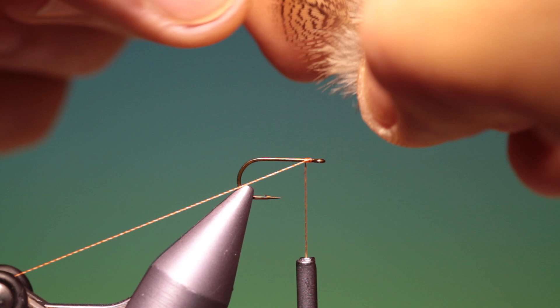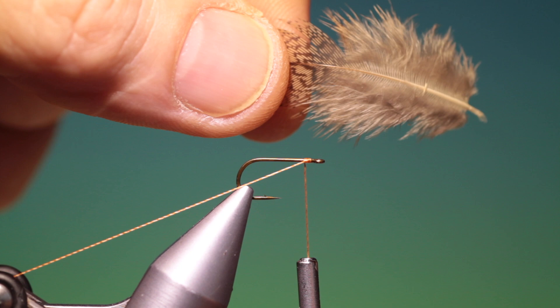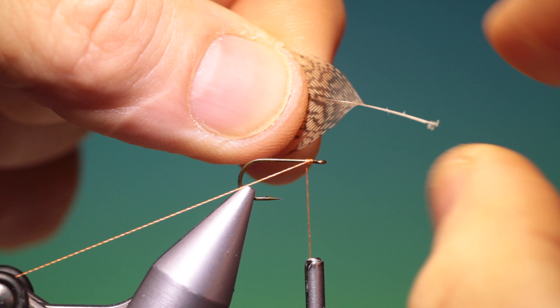So what we need now is a brown speckled partridge hackle. Now there are many ways and different techniques of tying this in, this is the way I do it. So we strip off those, need a few more off there.